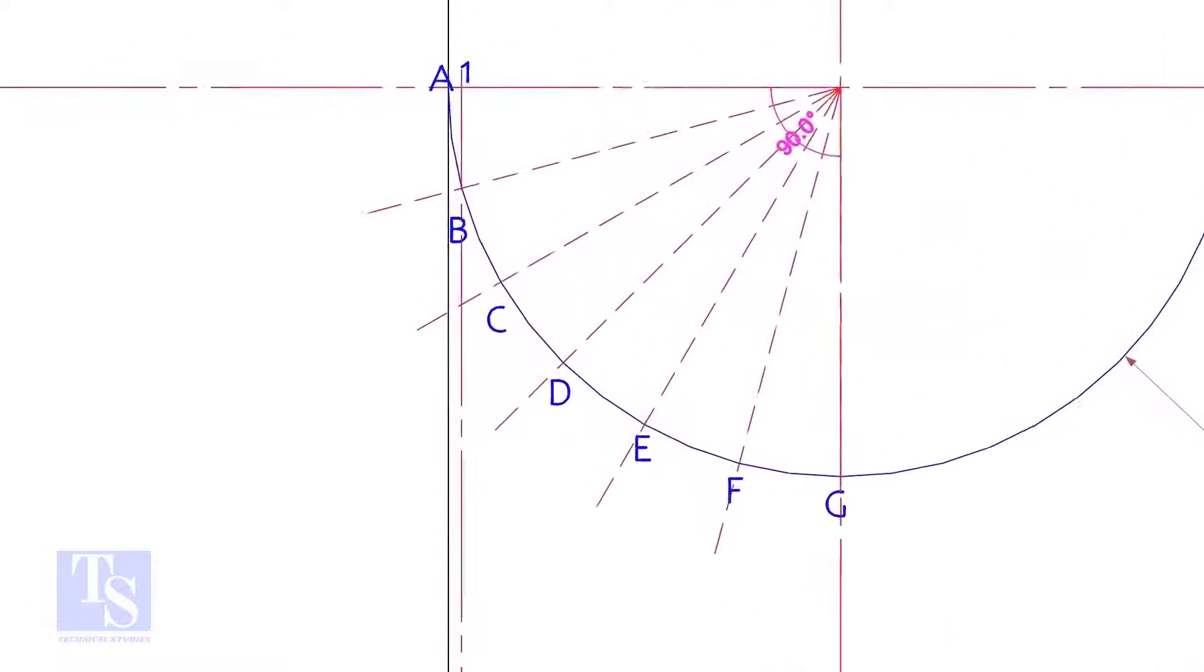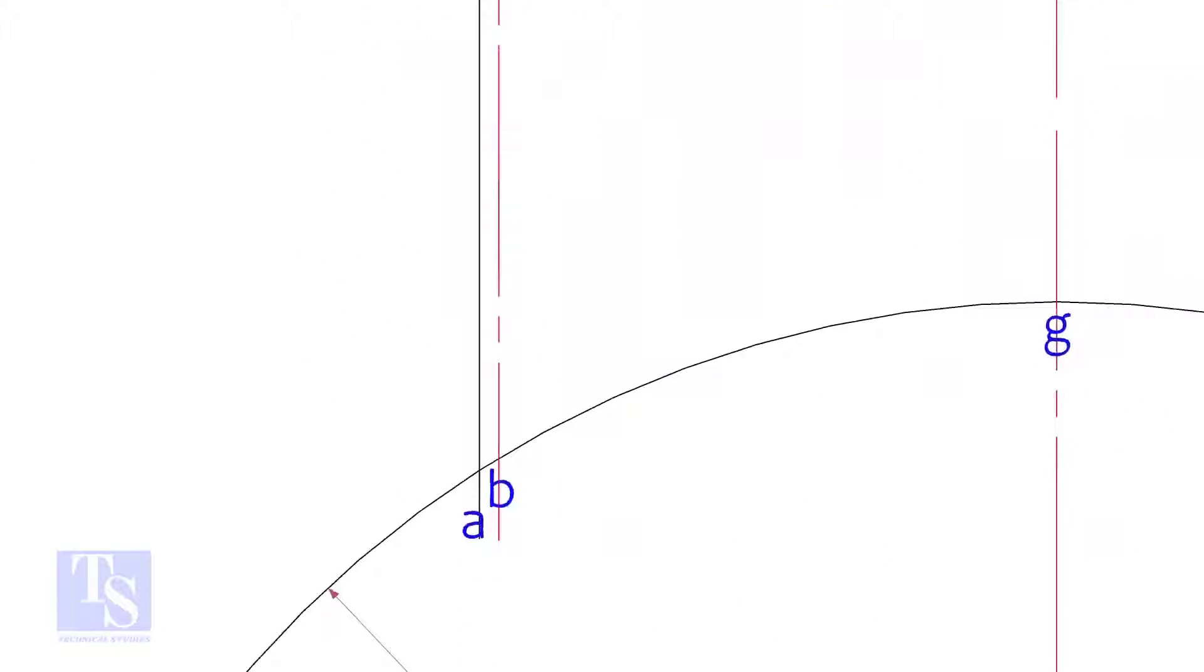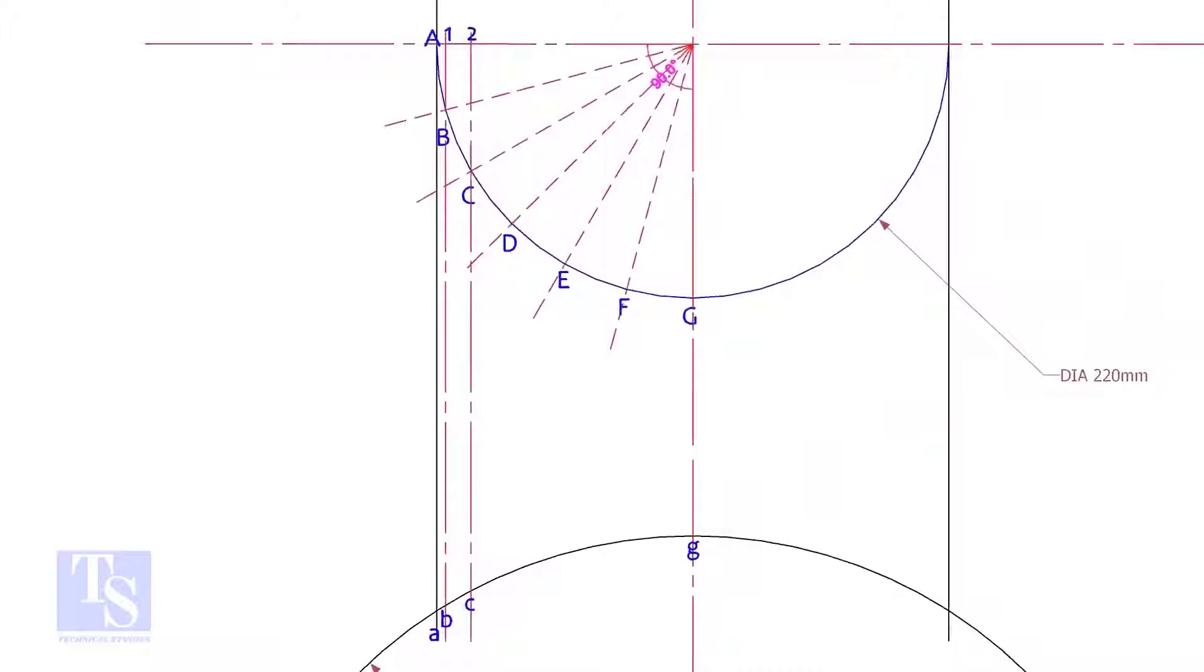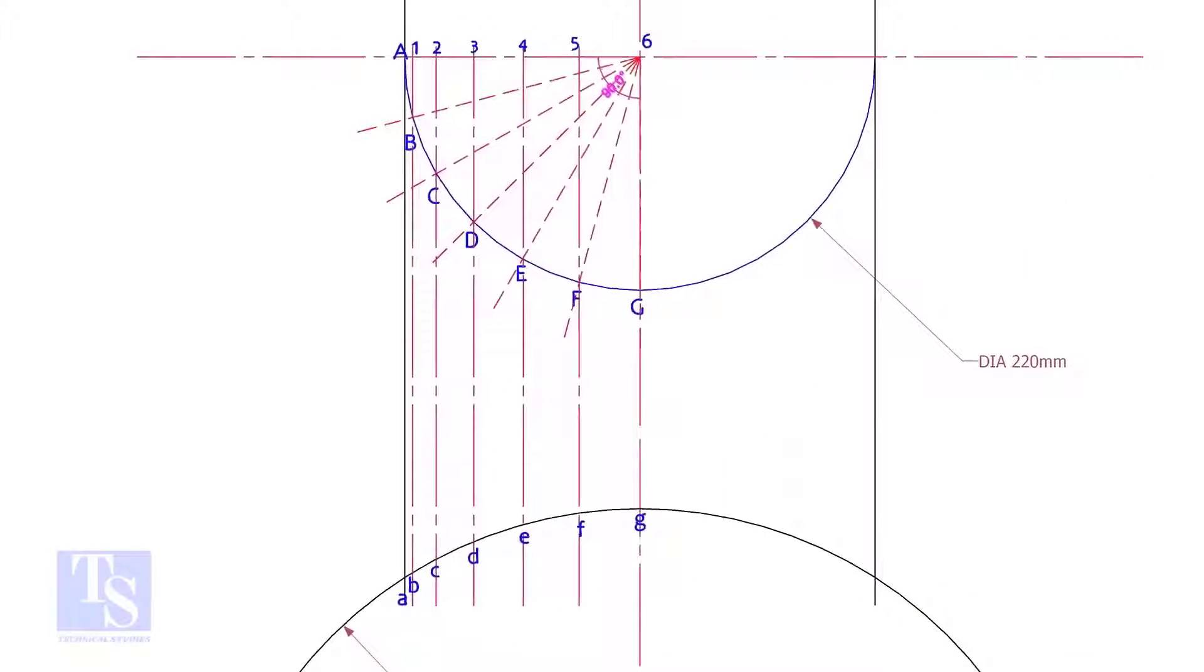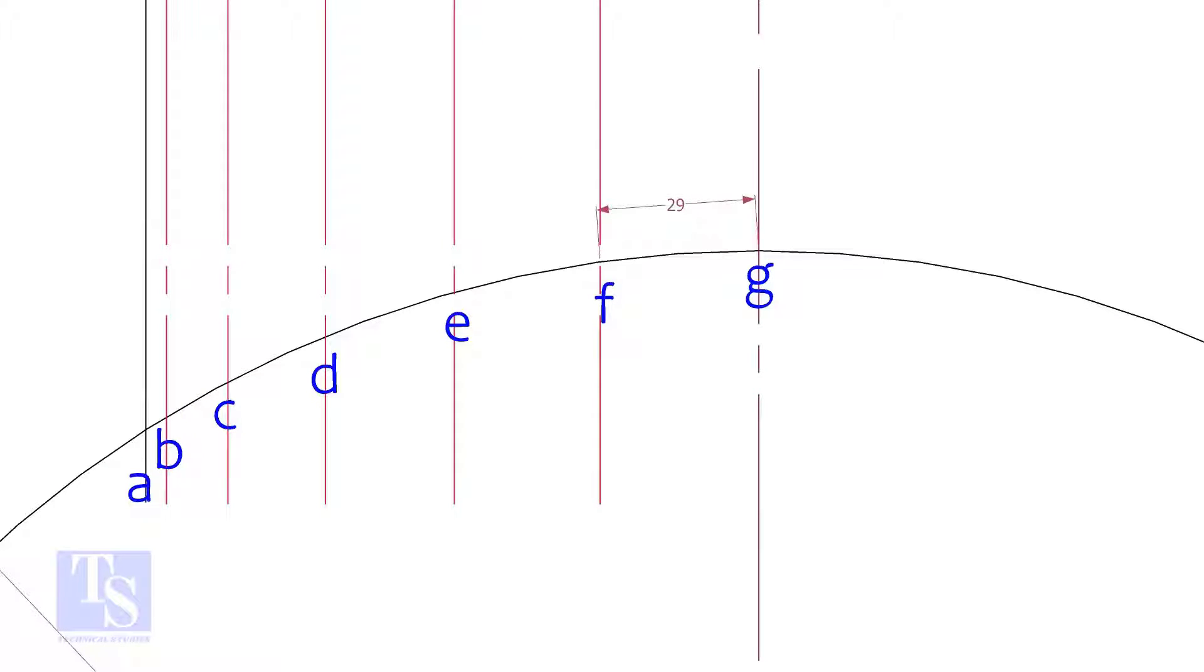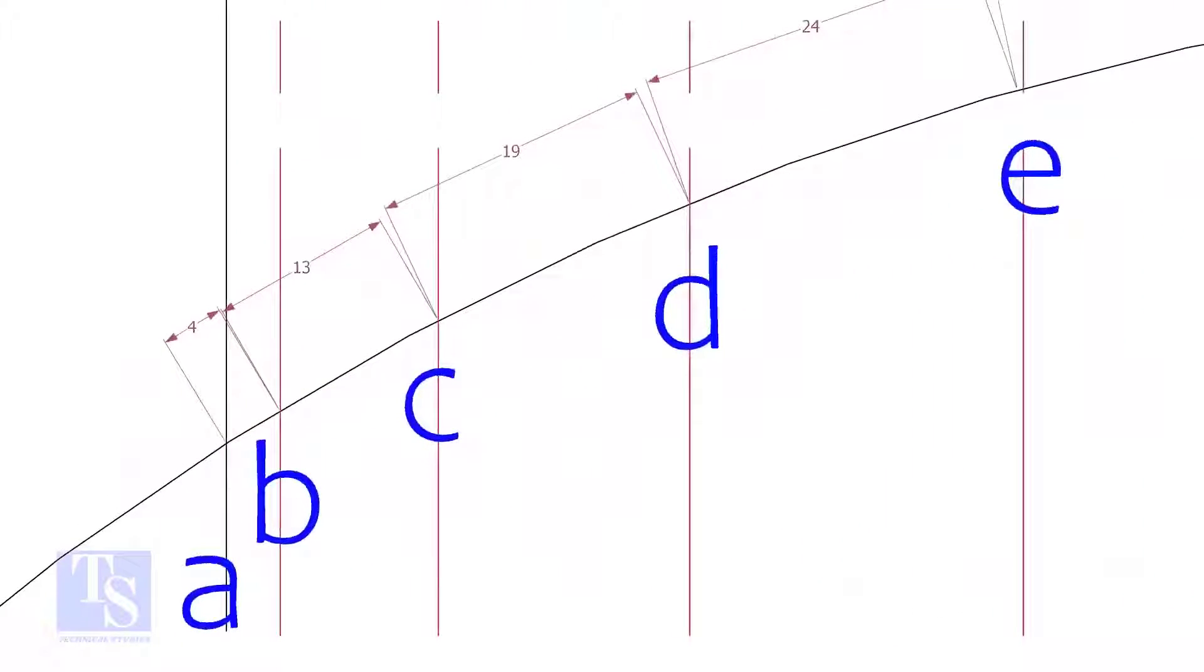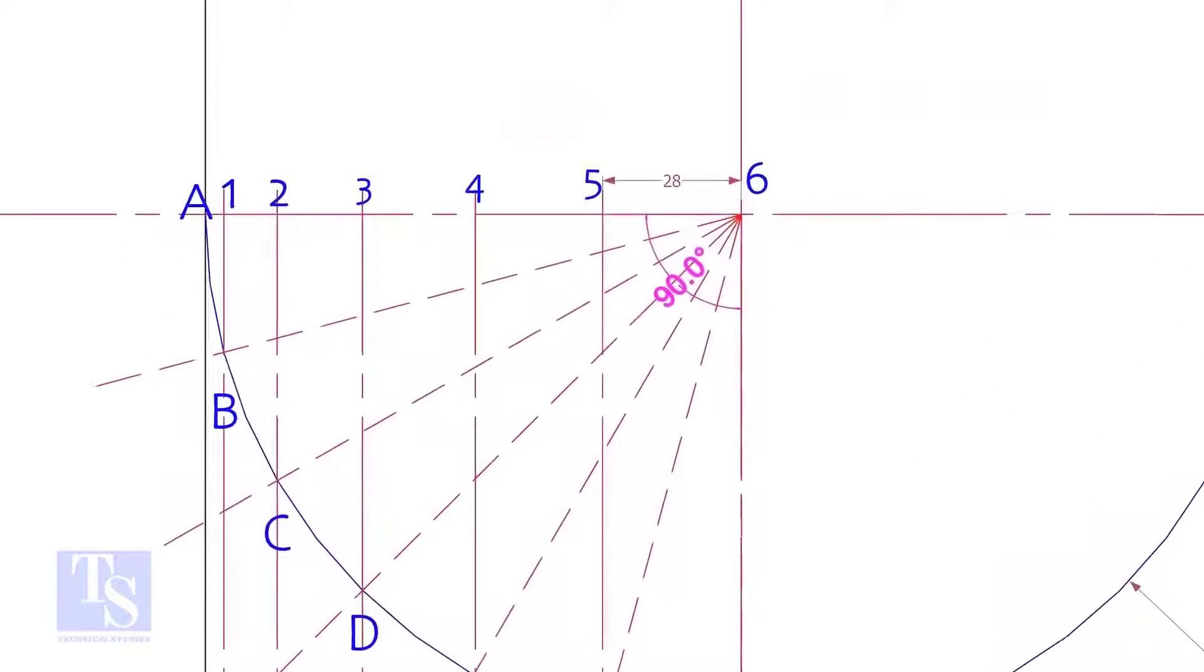Draw perpendicular lines B, C, etc. Measure and note down the arc lengths GF, FE, etc. Don't measure the chord length. Hope you all know the difference between the arc length and the chord length. Go to the top and measure and note down these measurements.